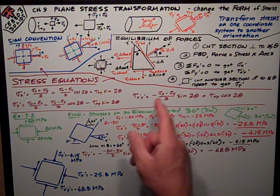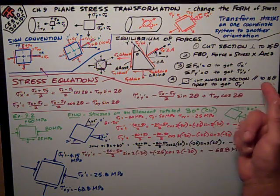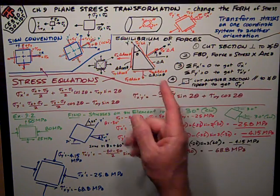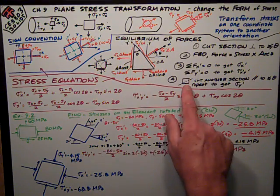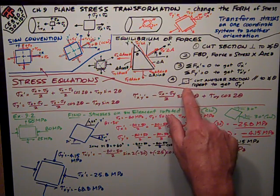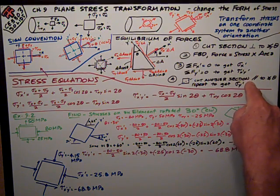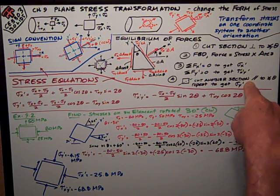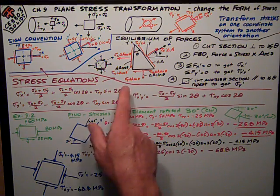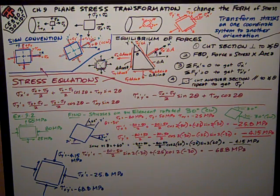And then I can repeat that by cutting another section parallel to the angle of rotation, perpendicular to this angle. It's like a little section like that. I'm using the bottom part. And I can repeat this process to get sigma y prime. I can do some math and combine things. And you'll see it in the book if you want to look at it in more detail. But I end up with these stress equations.